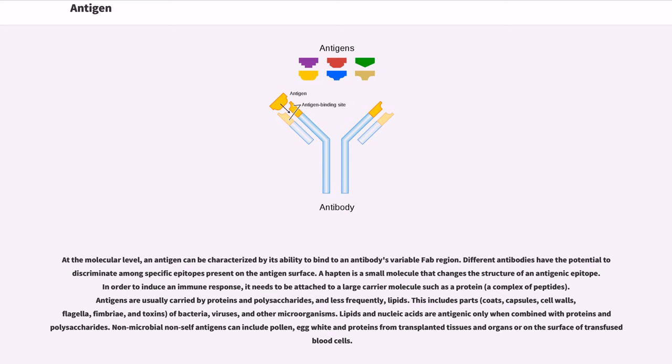At the molecular level, an antigen can be characterized by its ability to bind to an antibody's variable Fab region. Different antibodies have the potential to discriminate among specific epitopes present on the antigen surface.